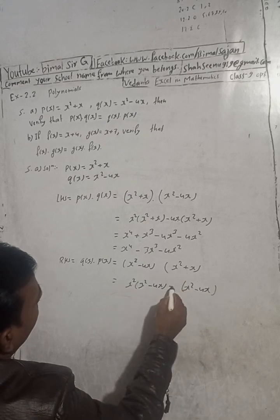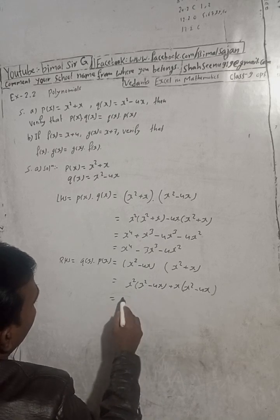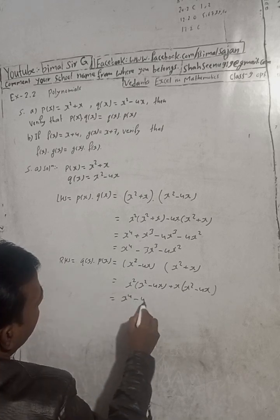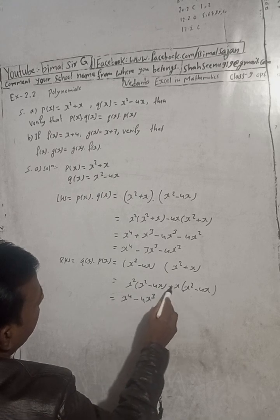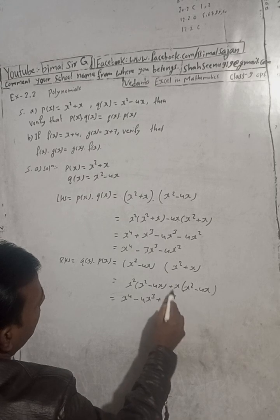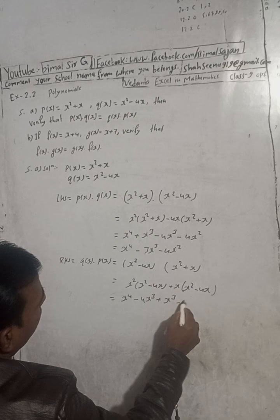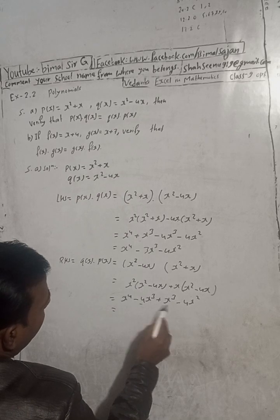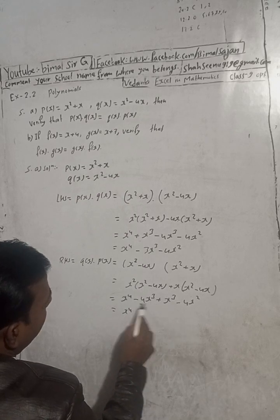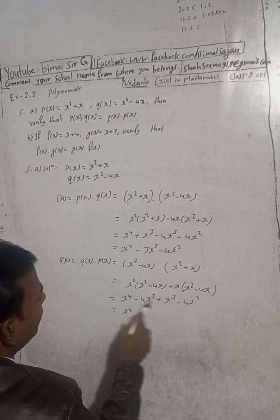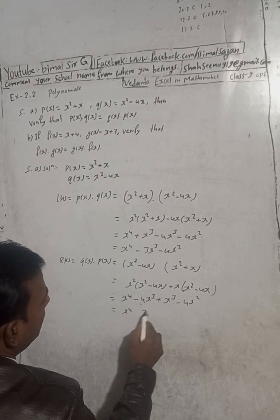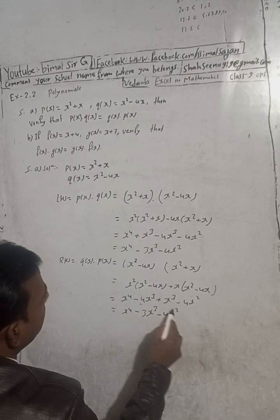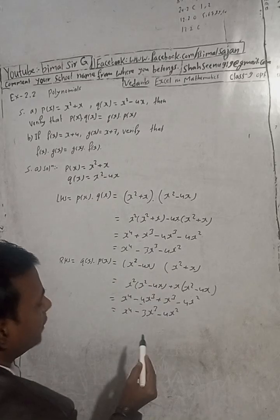Expanding: x² into x² gives x⁴, x² into x gives x³, minus 4x into x² gives -4x³, and minus 4x into x gives -4x². The like terms are the x³ terms: 4 minus 1 = 3, and 4 has minus, so -3x³. The -4x² remains. RHS = x⁴ - 3x³ - 4x².